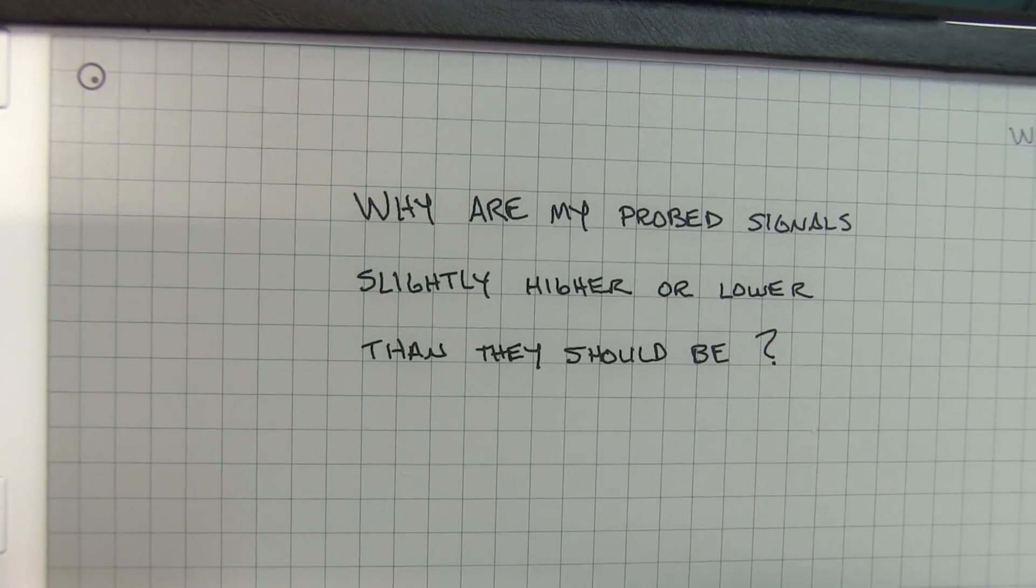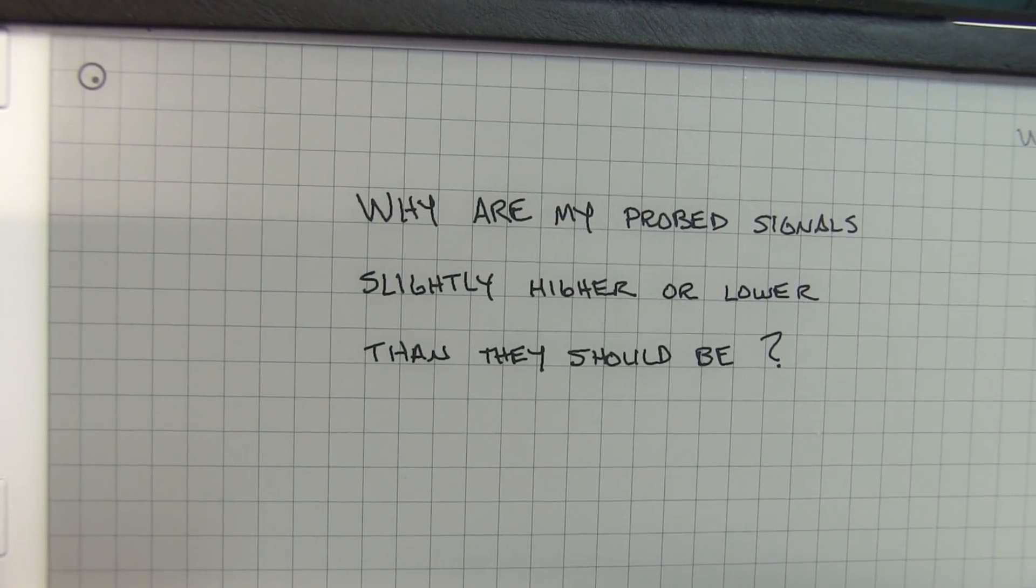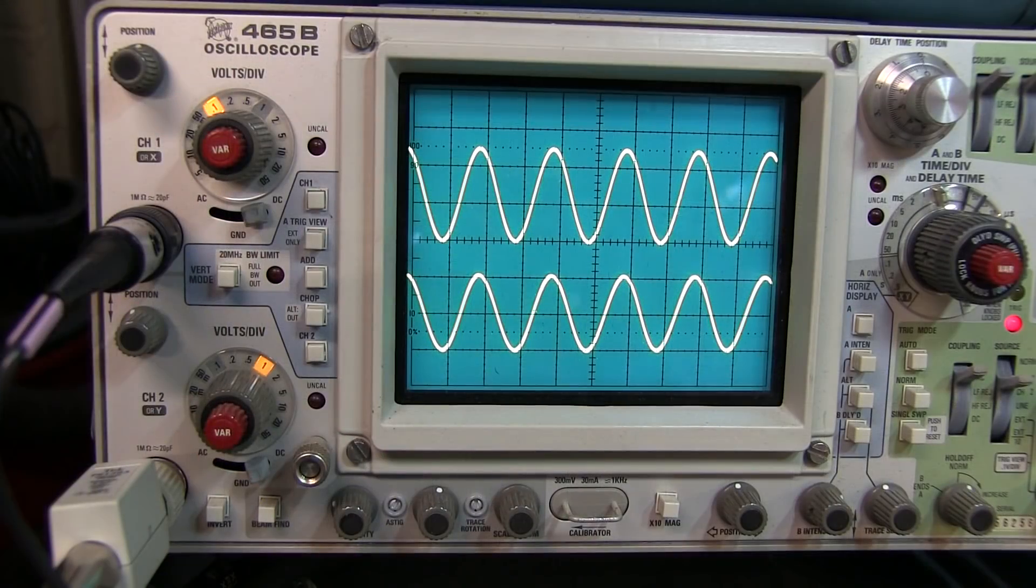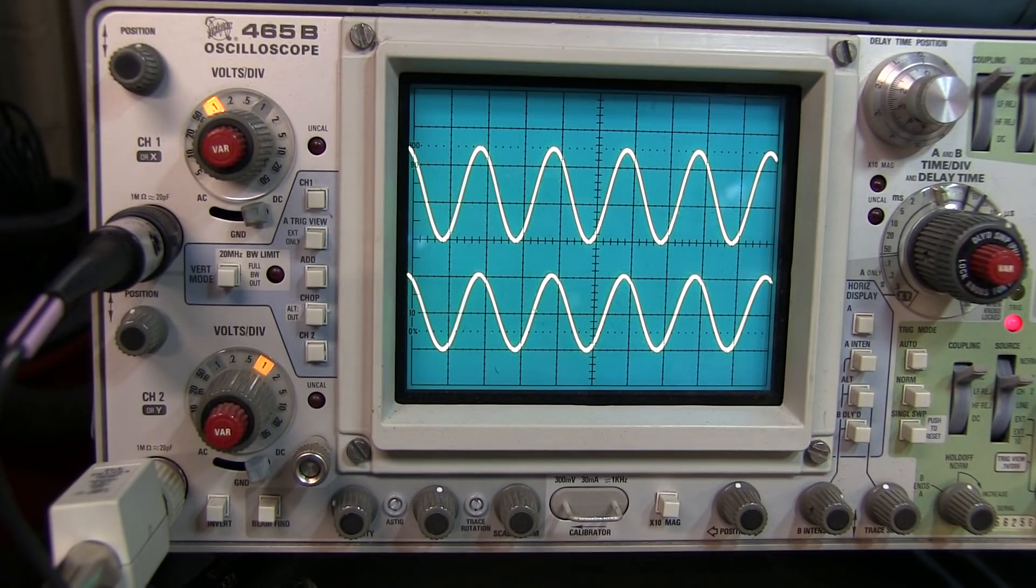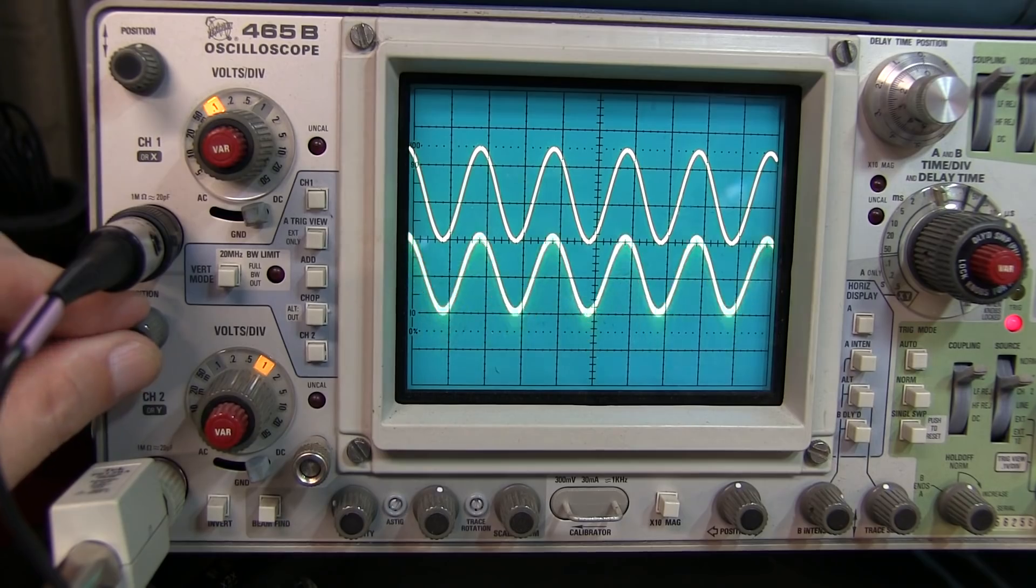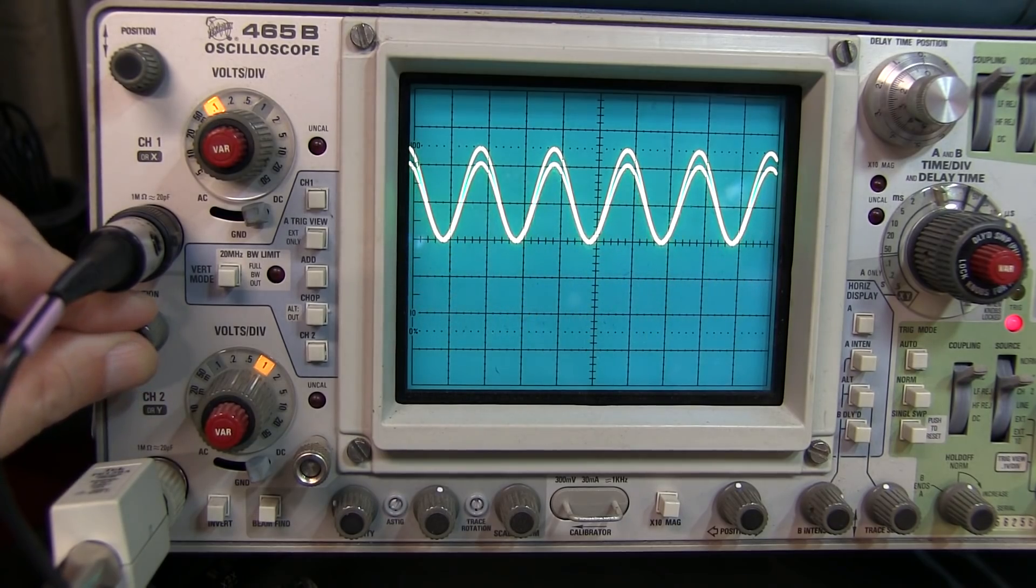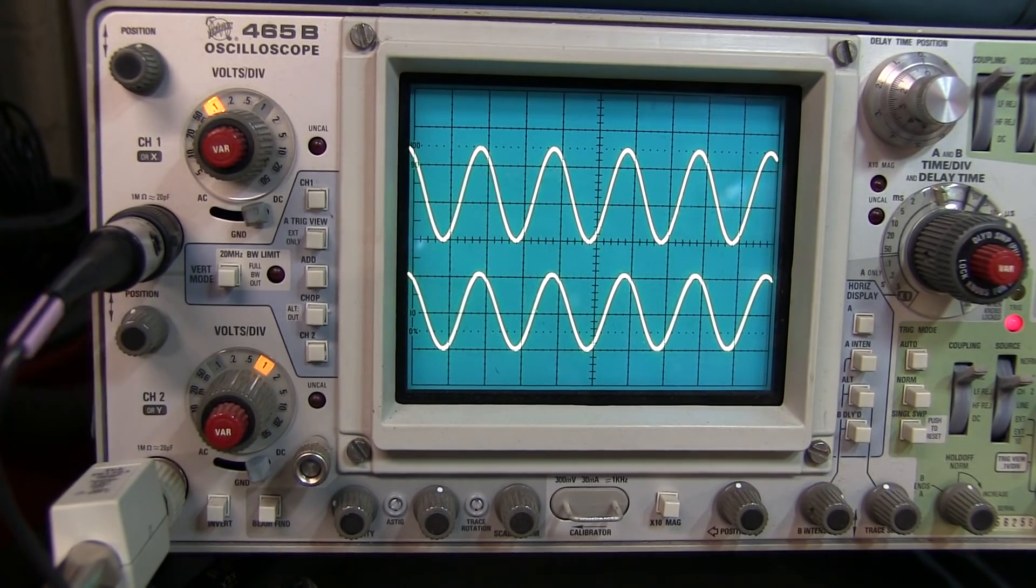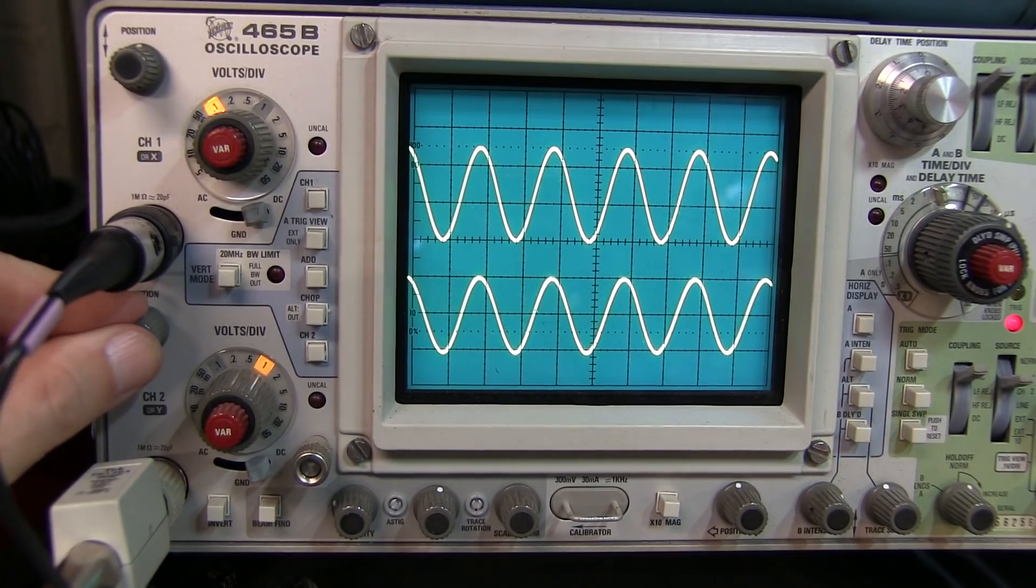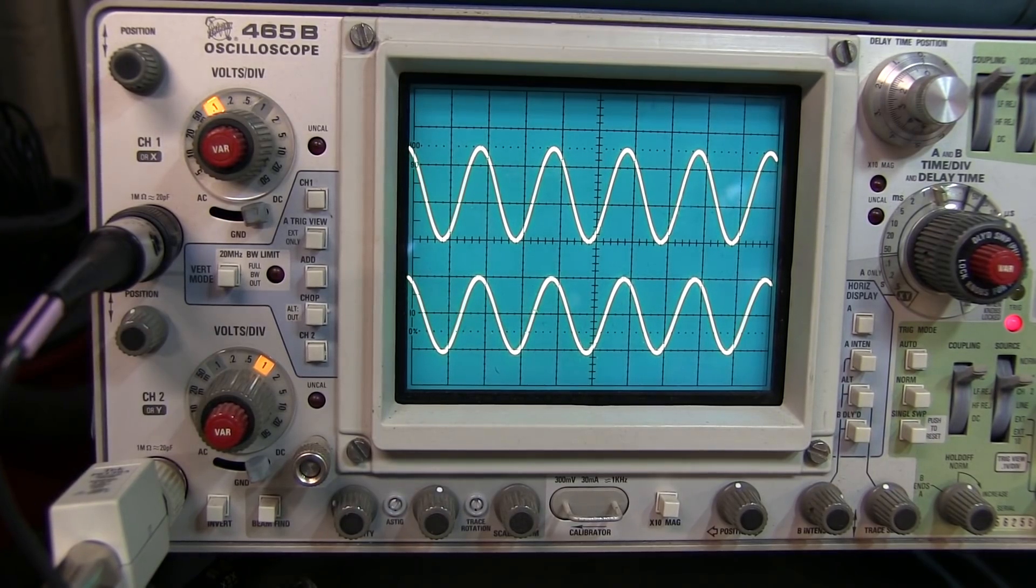And finally, why are my probed signals slightly higher or lower in amplitude than they should be? Now here I've got two 10x probes probing the same signal, but we can see that there are different amplitudes. It might make you think that one of the channels on my scope is not properly calibrated. But this is most often caused by not properly compensating the probes.